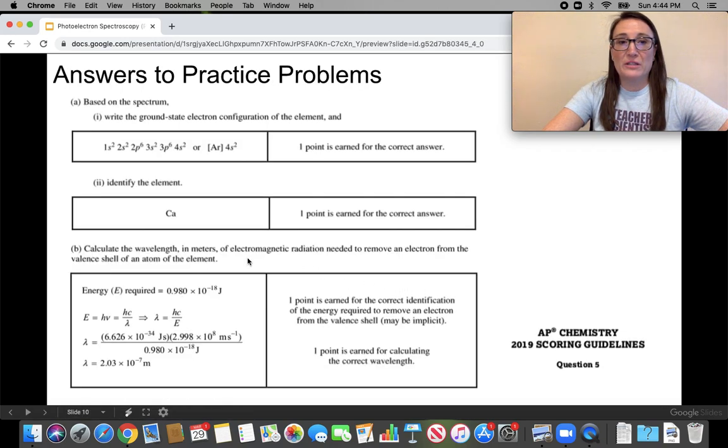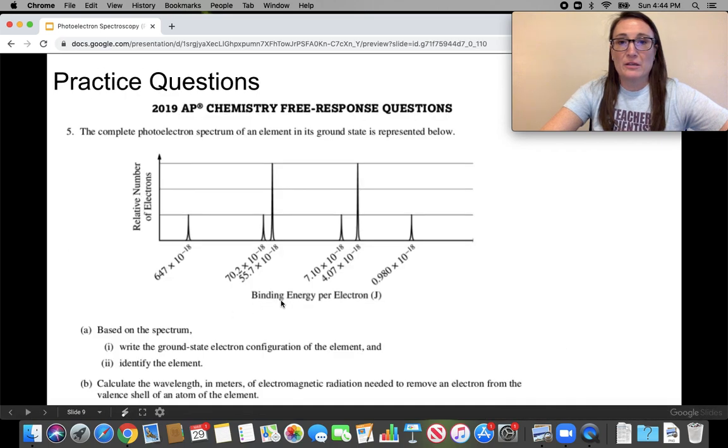So here are the answers. So we do have argon 4s2. Keep in mind, again, if I go back, you've got, this is all the same for argon, and then this is the 4s2, the valence shell. It is calcium.